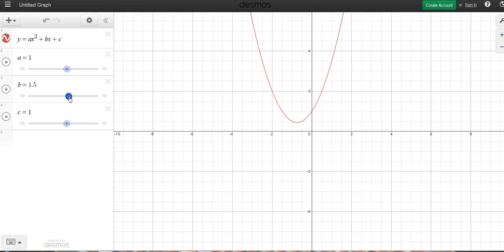When I choose B, you'll notice that the parabola starts to move sideways. Up and down. So the vertex is actually changing. So when I go into the positive, it's moving to the left. When I move into the negative, it moves to the right.